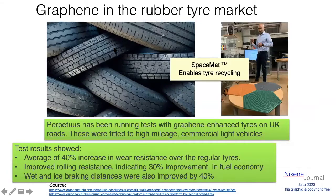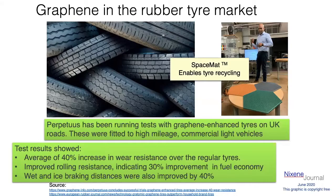Let's have a look at another example: car tires. Car tires are a really big problem — they get thrown away and some of the dumps, like in Kuwait, you can actually see them from space. We've got them all over the United States too. Really difficult things to recycle. Anything that allows car tires to last longer is a good thing. There's a company called Perpetuous. They've been running tests with graphene-enhanced tires — mixing graphene in with the rubber — over a period of about a year on UK roads with high-mileage commercial light vehicles. They've found a 40% increase in wear resistance, better rolling resistance for improved fuel economy, and also better performance in snow and ice.